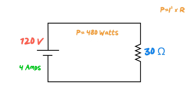So we can use any of those three formulas: P equals E times I, P equals E squared over R, or P equals I squared times R to find our power. That covers the relationships between current, voltage, and resistance with regard to power. The nice thing is you can always use all three formulas to double-check your work — that's the joy of Watt's Law.